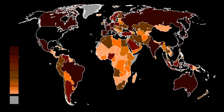GDP is the sum of consumption, investment, government spending and net exports: Y equals C plus I plus G plus NX. Consumption is normally the largest GDP component in the economy, consisting of private expenditures — household final consumption expenditure. These personal expenditures fall under durable goods, non-durable goods, and services. Examples include food, rent, jewelry, gasoline, and medical expenses, but not the purchase of new housing.